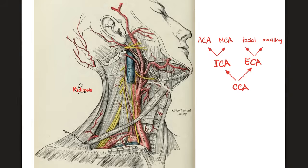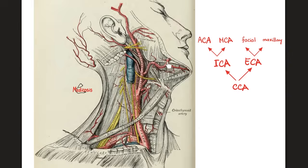This is the brachiocephalic artery. This is the right subclavian. This is the right common carotid. The right common carotid gives the right internal carotid for the brain and the right external carotid for the face. The internal carotid has five branches; the two most important are the anterior cerebral and middle cerebral. The external carotid artery has eight branches — for now, remember two: the deeper one is the maxillary artery, and the more superficial one is the facial artery.